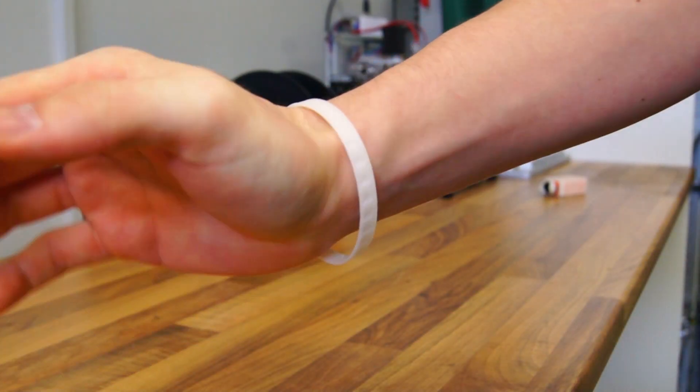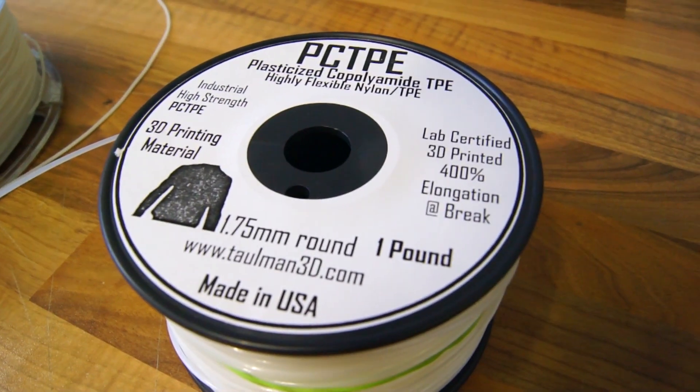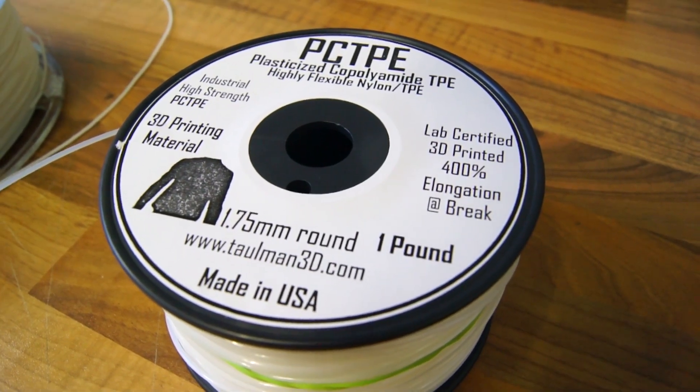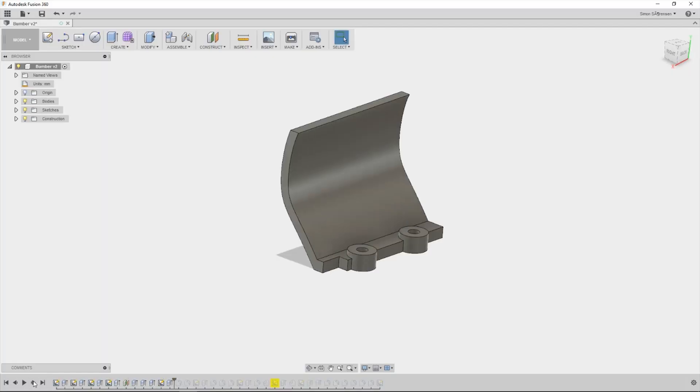But sometimes you need something a little bit more tough and that's when we used the PCTPE nylon filament. I sketched up a bumper for one of my radio controlled cars and printed it out.